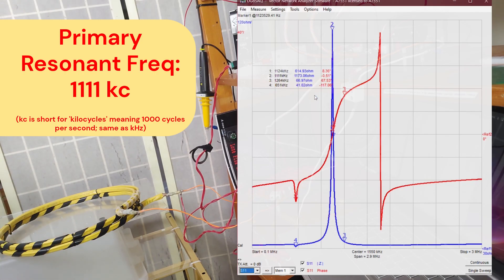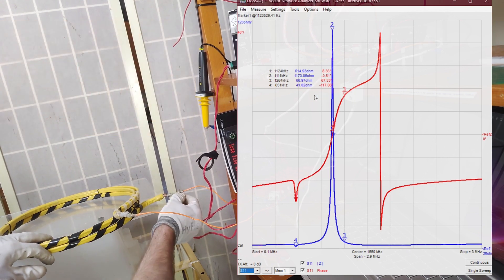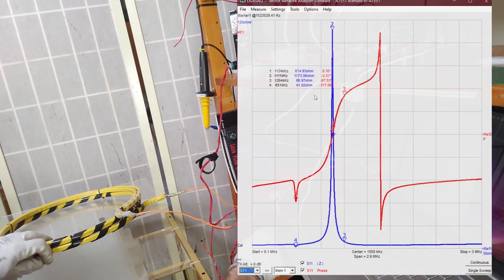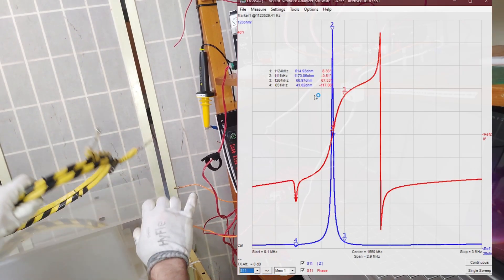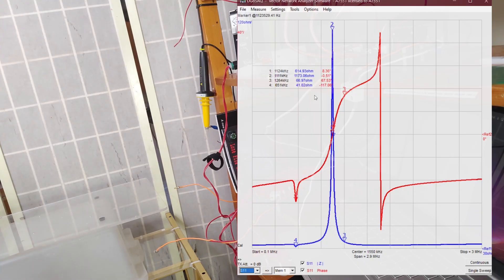Now the secondary coil is being series fed from the VNA. The positive of the VNA goes to the bottom of the coil, the negative goes into my RF ground.